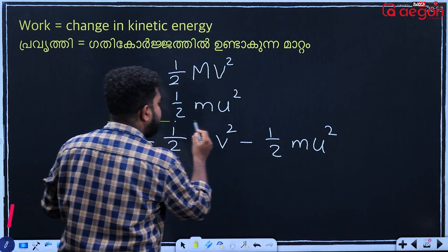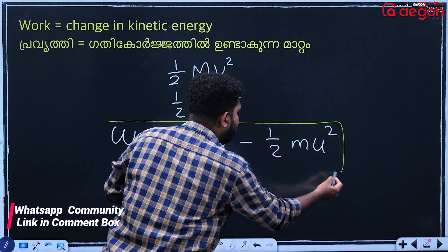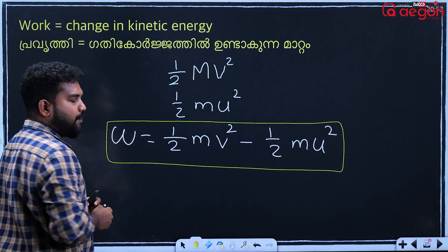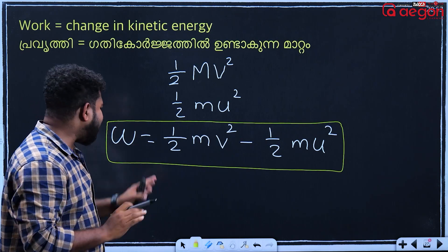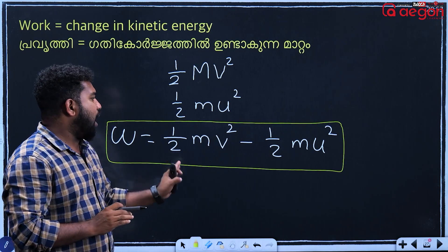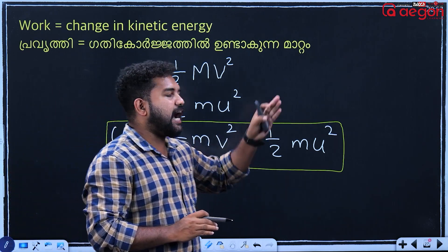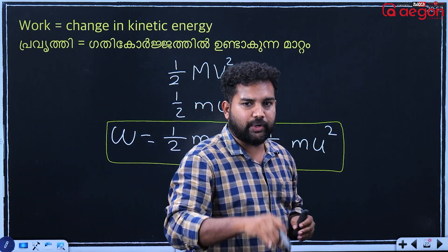Work is equal to half mv squared minus half mv squared.